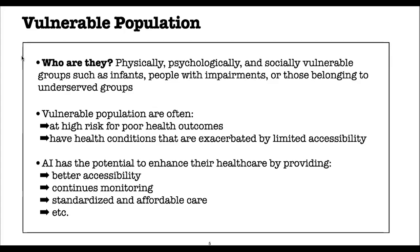I want to start by briefly talking about vulnerable populations — who they are and why they need our attention. Vulnerable populations are physically or socially vulnerable groups such as infants, pregnant women, people with some disabilities, or those belonging to underserved groups. These patients are usually at the highest risk of poor health condition due to their limited accessibility to healthcare resources. One way to enhance their health would be to use technology such as AI.